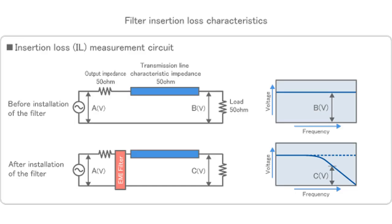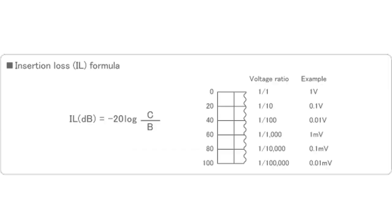Insertion Loss: Insertion loss is one of the most important technical parameters of EMI power filter. In the premise of ensuring the safety, environment, machinery and reliability of the filter to meet the requirements of the relevant standards, the insertion loss can be achieved as high as possible.